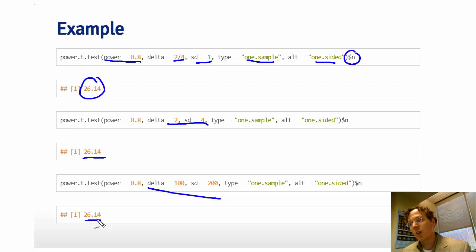Now, what I'll leave as an exercise for you guys is to, for example, omit delta and put in an n and have power.t.test show you what's the minimum detectable delta in order to detect, in order to have 80% power for a specific sample size.